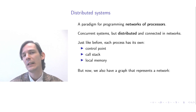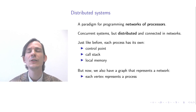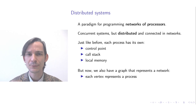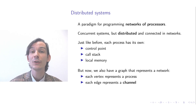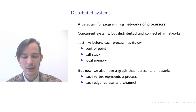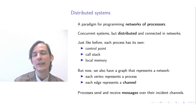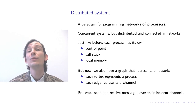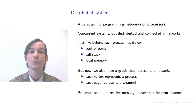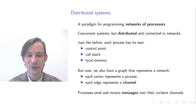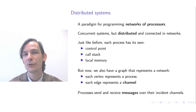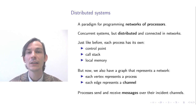The only way that processes can communicate with each other is through networks. We could understand the network as forming a graph where each vertex represents a process, and each edge between vertices represents a channel between the processes. Processes can then send and receive messages through their incident channels — neighboring vertices are those directly connected through an edge, and over those edges we have associated channels.